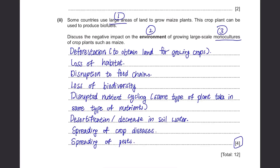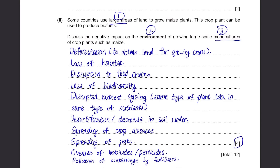To grow better crops, farmers will apply lots of herbicides and pesticides and other chemicals to remove unwanted organisms and species, which is bad for the environment. Lastly, growing crops requires the use of fertilizers, which can be washed away and enter nearby rivers or streams, polluting the water.